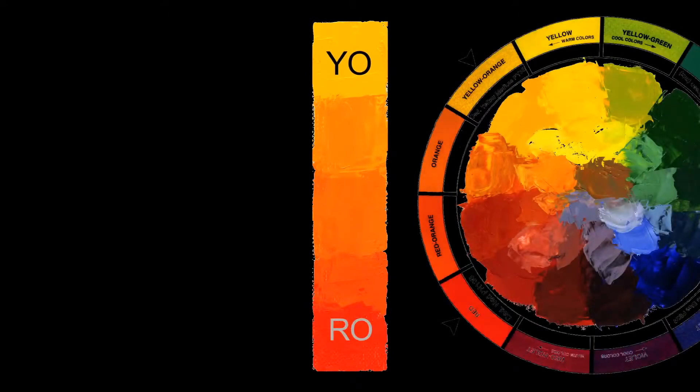To mix the clearest orange, choose two colors adjacent to orange on the color wheel. Notice that in both contributing colors, they include the word orange.